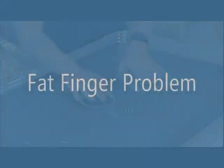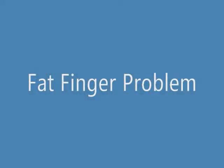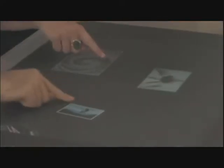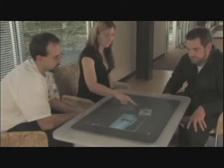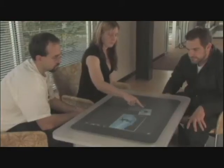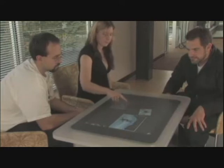Users also encounter the fat finger problem. This is used to describe the difficulty of selecting small objects, or in general the mapping of the user's contact area with a particular point. As we see here, the user's finger is in contact with the photograph, but it is not selected because the contact is being mapped to a point above it.